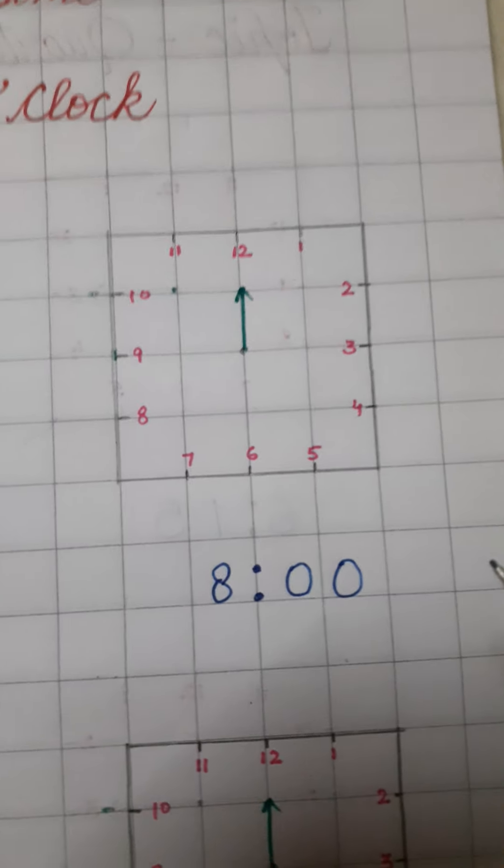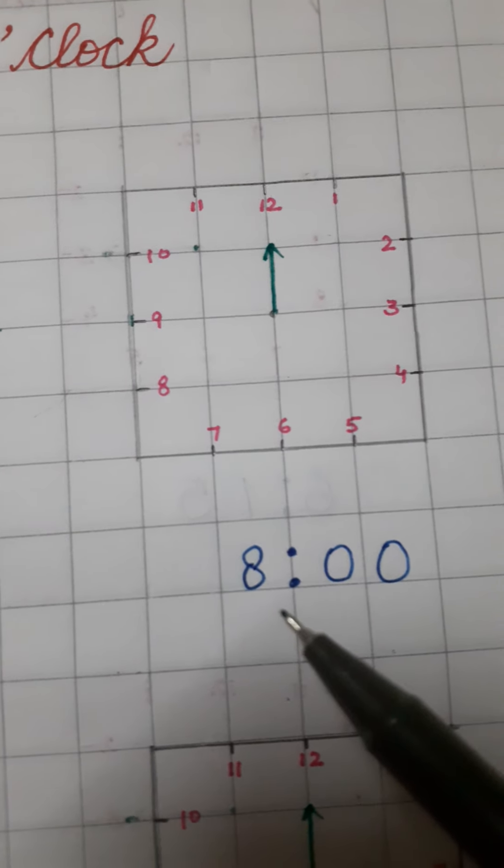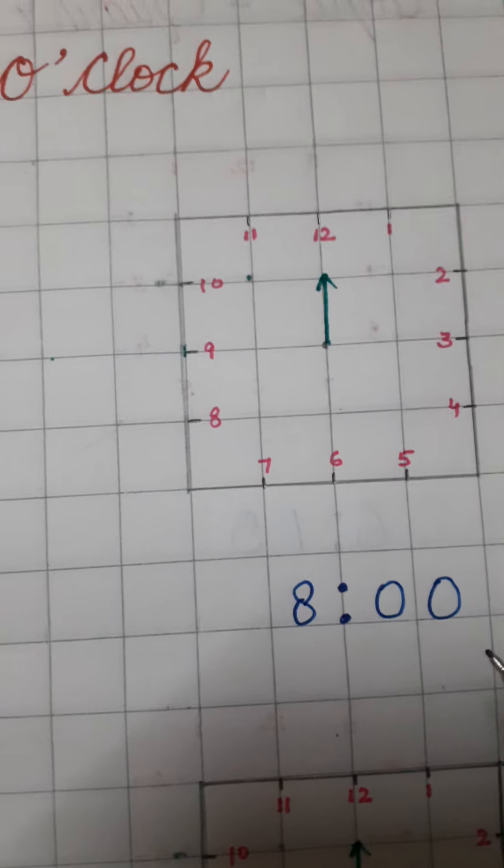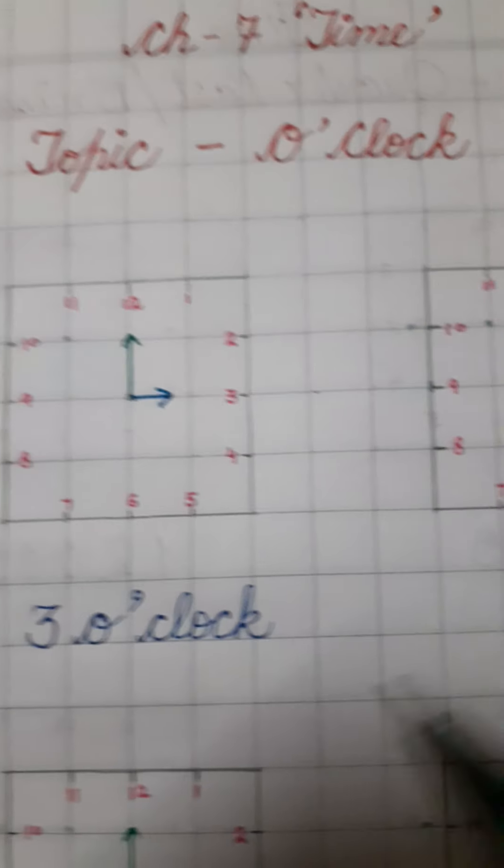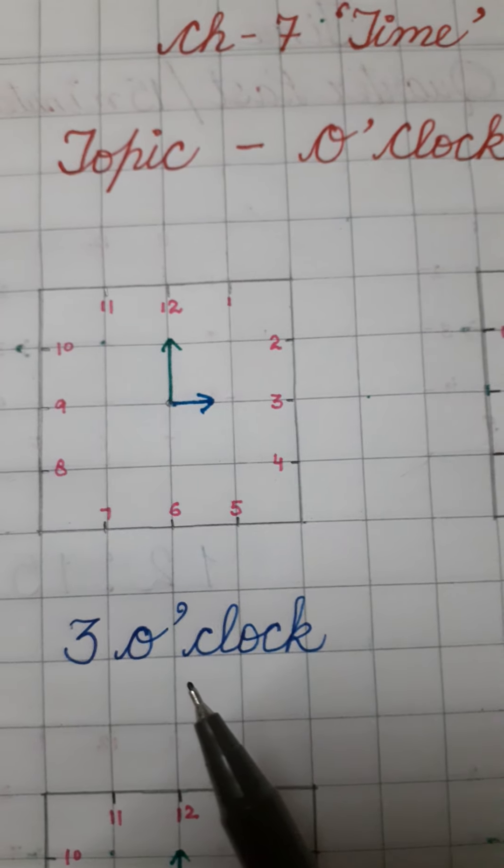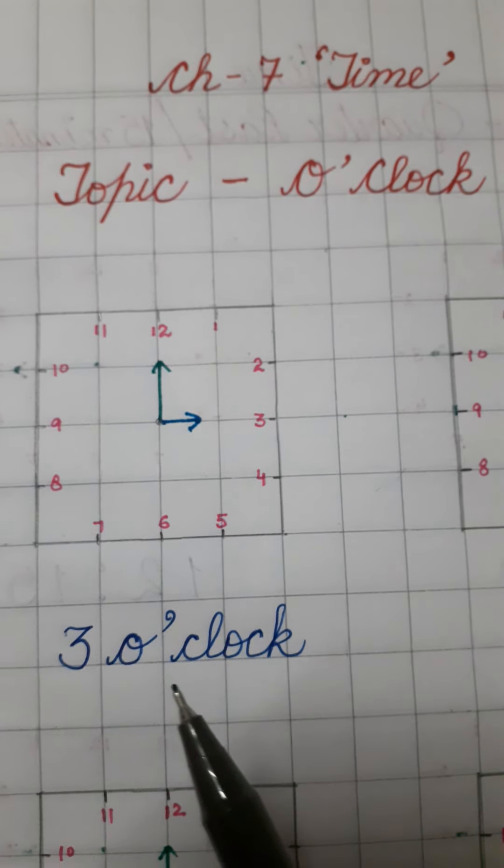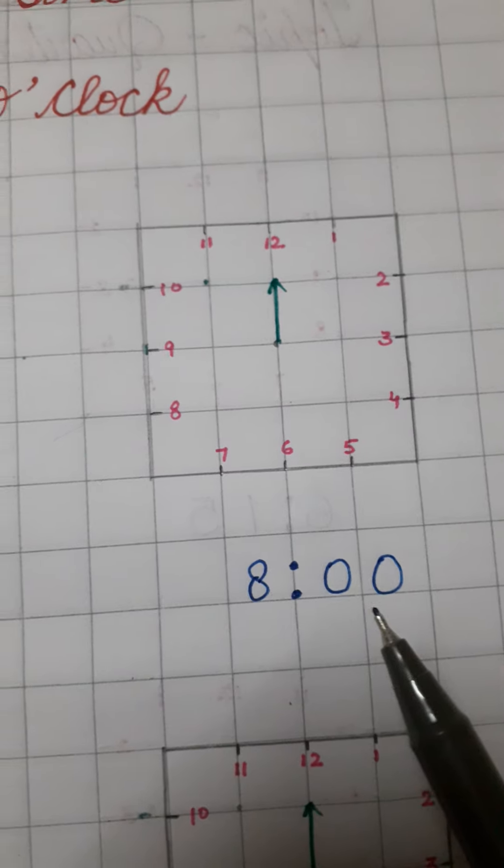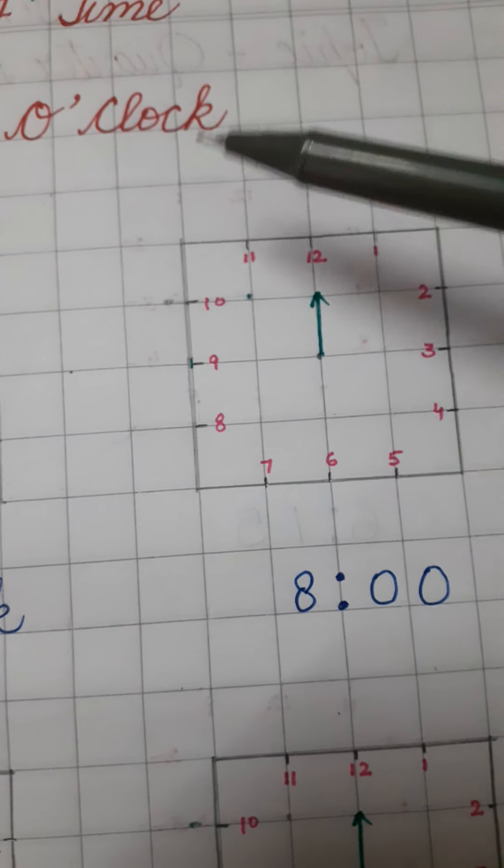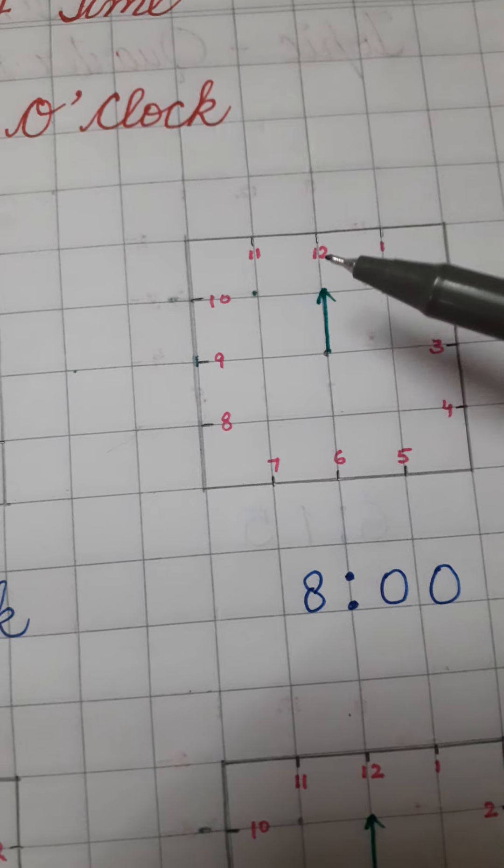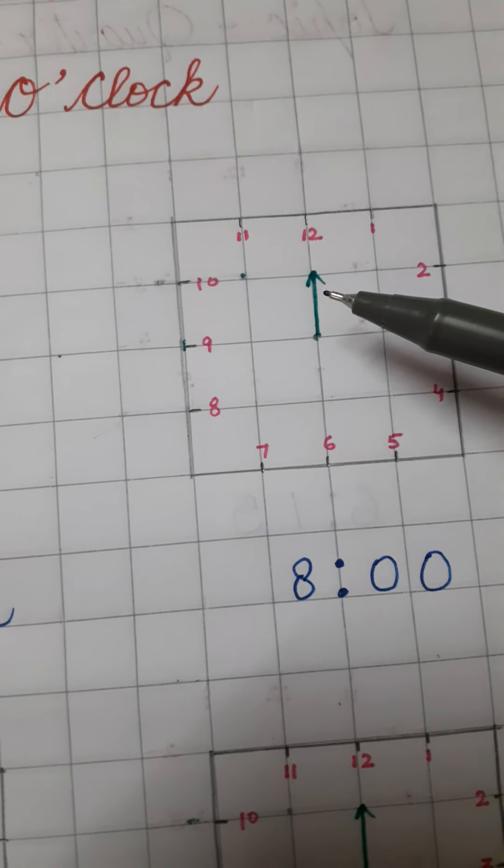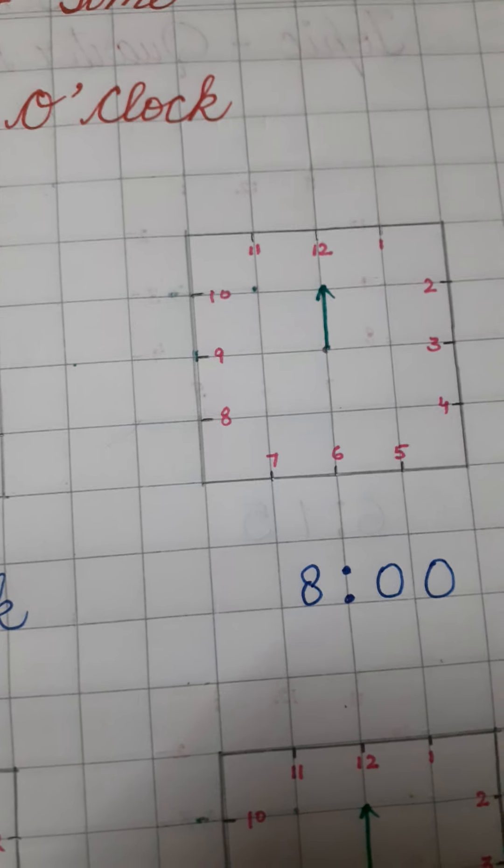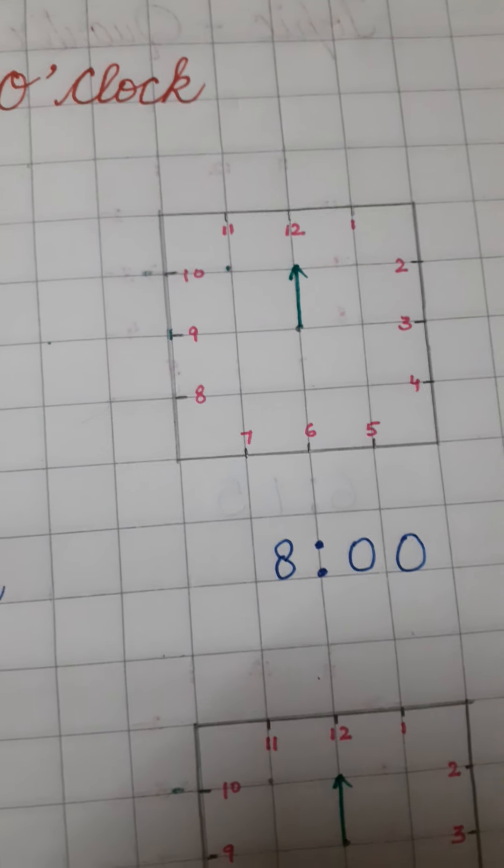Okay, now the next one. We have to show 8 o'clock. This time is called digital time. And this one is called time in words. This is time in words. And this is digital time. As we are doing o'clock, that is why I have already shown the long hand towards the 12.